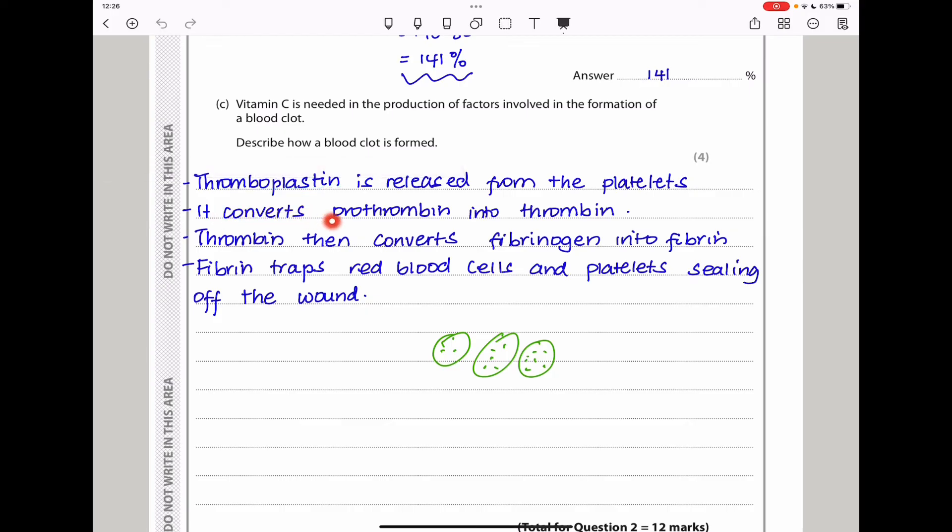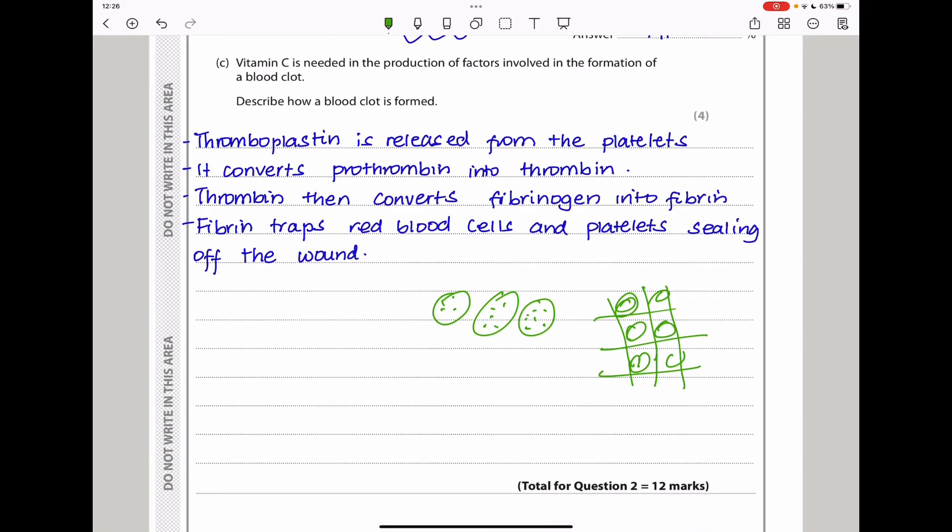When this thromboplastin is released, it causes the conversion of prothrombin into thrombin. Prothrombin is inactive, but thrombin is active. The thrombin is an enzyme which is going to cause the conversion of fibrinogen into fibrin. Fibrin is insoluble. This fibrin causes a mesh-like structure that is going to trap blood cells and platelet fragments, causing formation of a clot around the wound. This seals off the wound from infection and other microorganisms, some of which would be pathogenic, as well as stopping excess loss of blood.